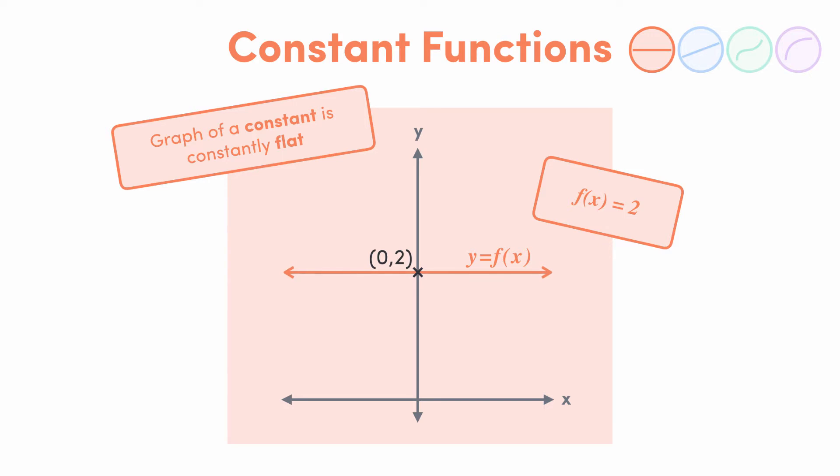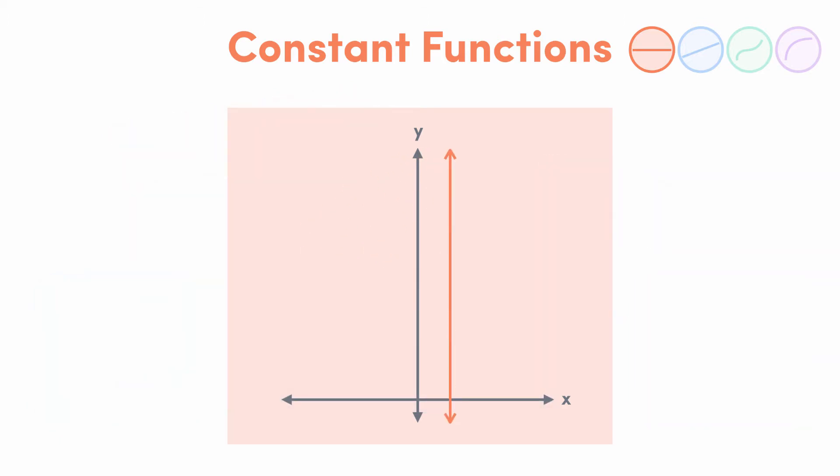So for f of x equals 2, the domain is all real x. X can be whatever the hell it likes, and the range is simply that y equals 2. Y can only ever be 2, no matter what x is. Alternatively, a vertical line has the equation x equals some number, like a half, but because this one doesn't pass the vertical line test, it's not actually a function of x.